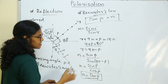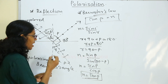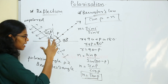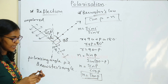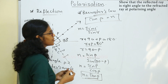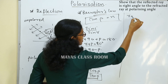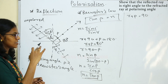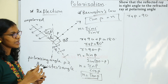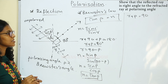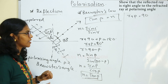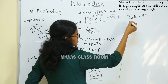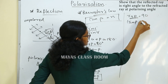We prove that R plus P is equal to 90 degrees. This is a reflected ray. You can see that the angle is 90 degrees. So R plus P is equal to 90 degrees. Therefore, we prove that tan(P) is equal to N.